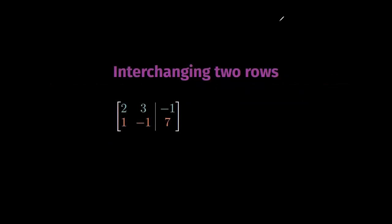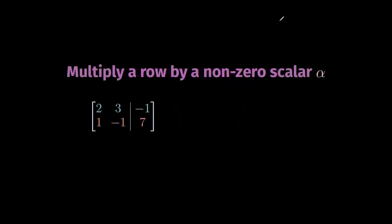Let's see these three row operations. The first is interchanging two rows — the easiest of the three. Note that the two resulting matrices are very different, but the associated systems will have the same set of solutions. The second operation says that if we multiply an entire row by a scalar α ≠ 0, this will not affect the set of solutions of the system. Here we are multiplying the second row by α, which we assume to be non-zero.